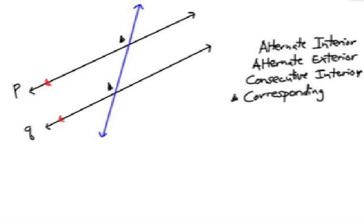It would be this one right here. If I lower that below the line, then the other pair of corresponding angles would be right there. And of course, if I look at the other side of the blue transversal, I would have a corresponding angle pair right there, and another corresponding angle pair right there. Corresponding angles are congruent.